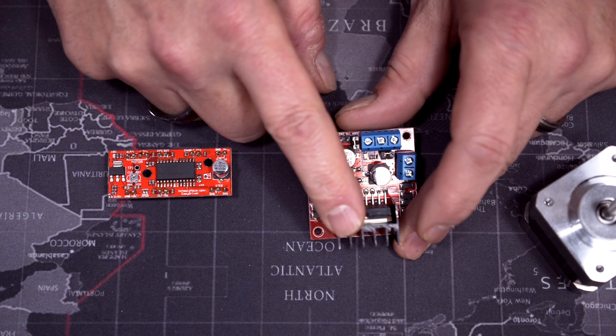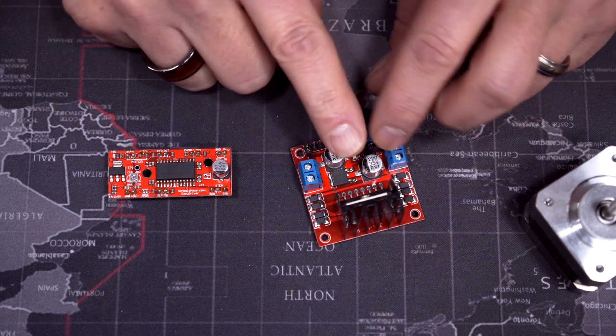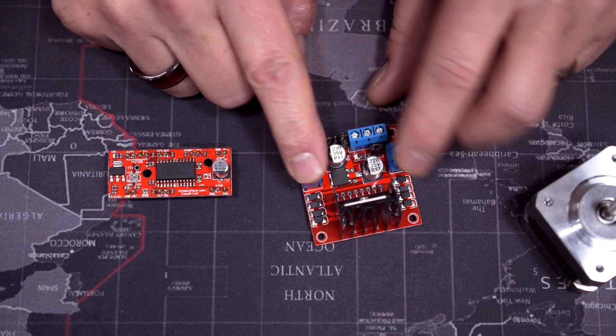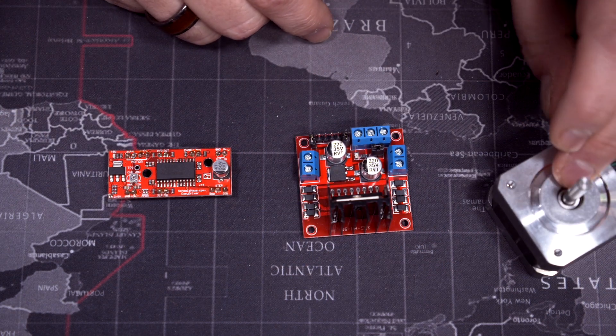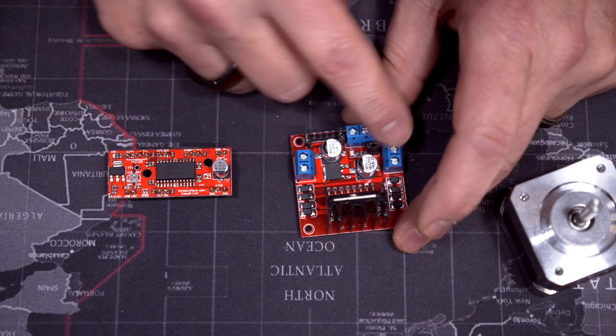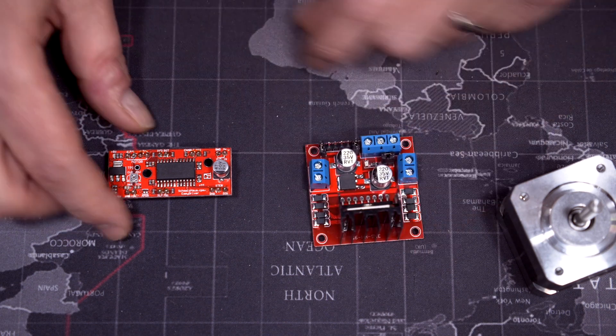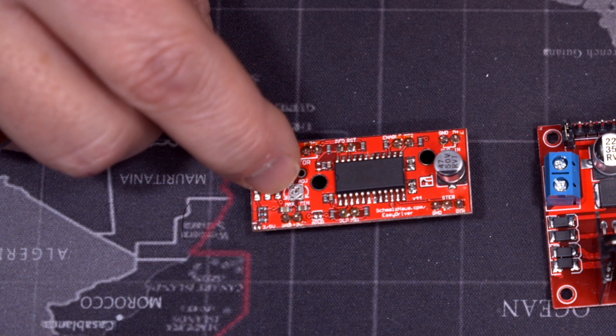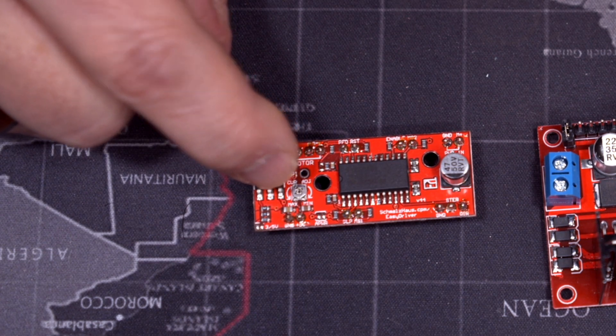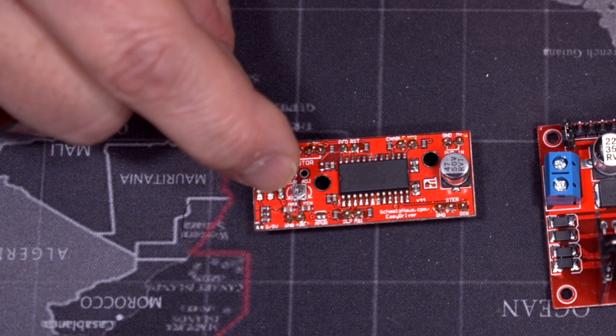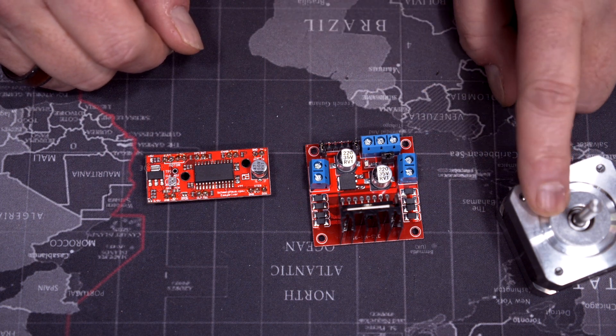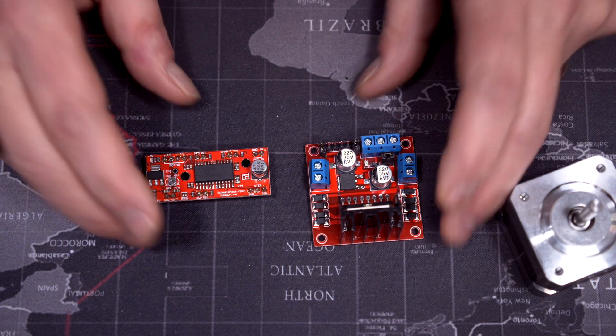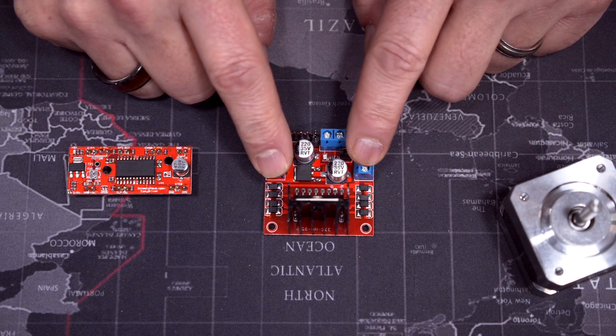Now another bad thing about the L298N is that it can't regulate the power output. So basically you connect the motor, the motor is going to ask for full power and this guy is going to provide it. There's no way to adjust the power here. On the EZ driver, you can see there's a little pot here and you can adjust this to limit the current that's going to go to your motor.